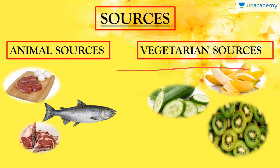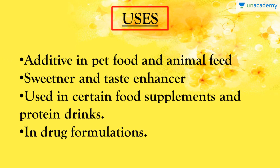Glycine is a non-essential amino acid, meaning it is synthesized inside our body, mainly in the liver. It does not need to be obtained directly through the diet. However, if we need an immediate source of glycine, we can turn to those dietary sources mentioned.